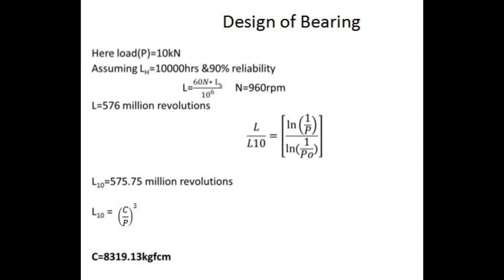Here L equals 576 million revolutions. The formula is L divided by 10 equals ln of 1 by P divided by ln of 1 by P0. L10 equals 575.75 million revolutions. L10 equals C divided by P to the power 3, where C equals 8319.13 kgfcm.